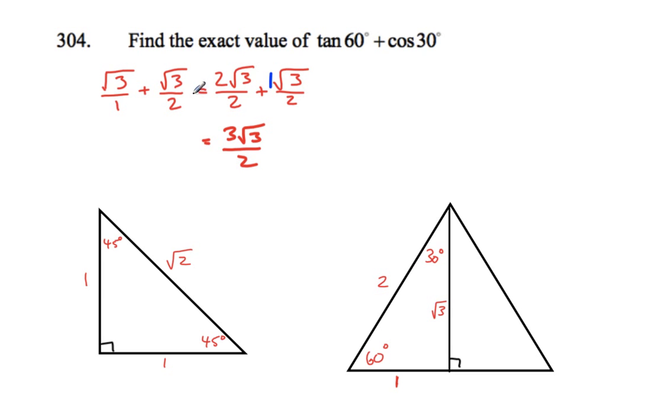I've got ahead of myself there. So the reason why we turned this into this, so it was so that it had the same bottom so we could add across the top and keep the bottoms the same. So what we did was multiply the top by 2 and the bottom by 2 to create a situation with the same denominators.